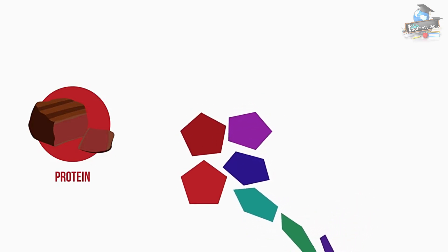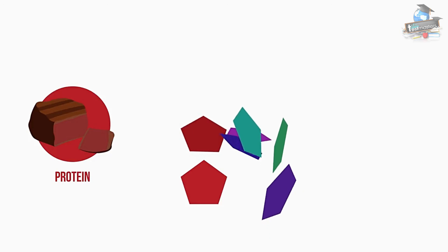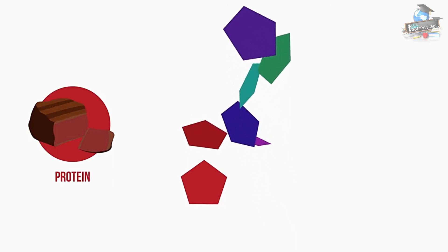The protein then folds up into a complex 3D shape, which is held together by weak bonds. The function of each protein depends on its shape.